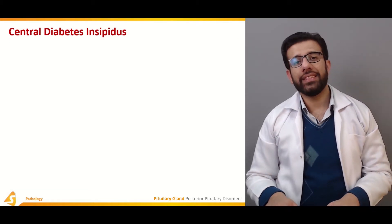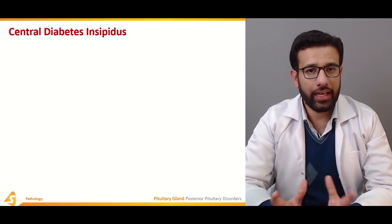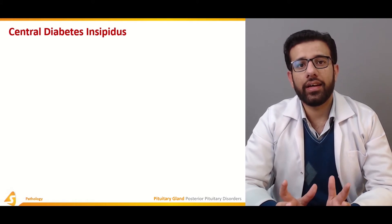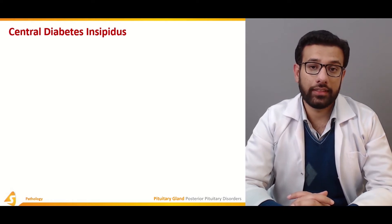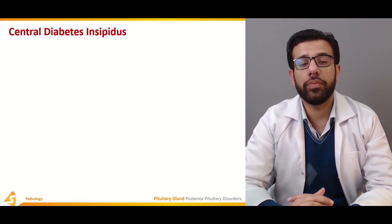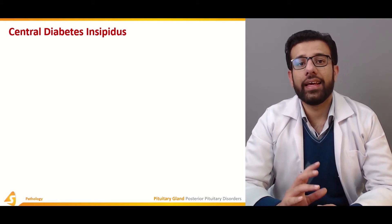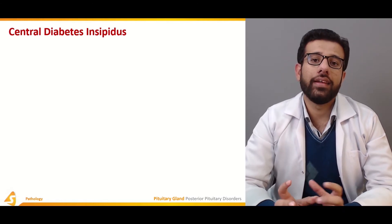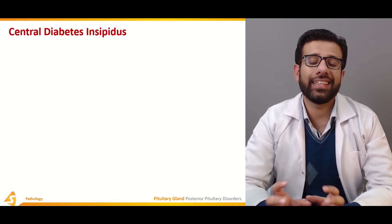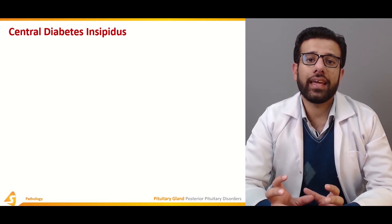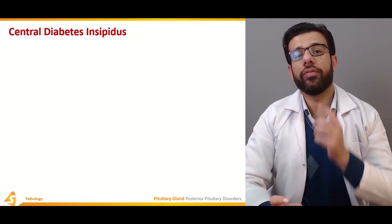There are two types of diabetes insipidus: central and nephrogenic. In central diabetes insipidus, the pituitary gland — specifically the posterior pituitary — is involved. The most important hormones of the posterior pituitary are oxytocin and ADH. In central diabetes insipidus there can be an inappropriate release of ADH, known as SIADH, which is associated with the clinical picture of diabetes insipidus.